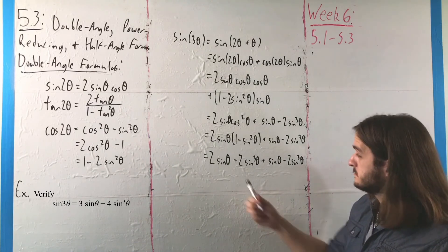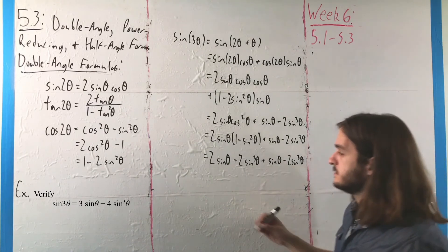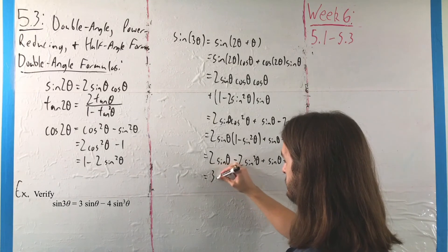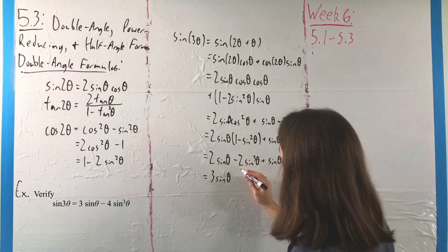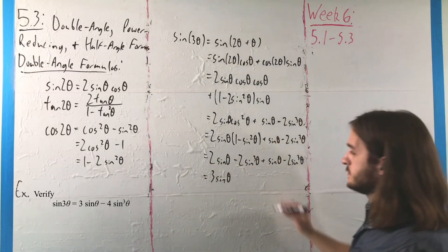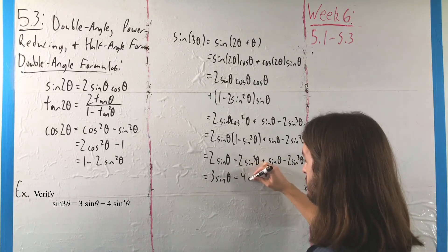Plus a sine of theta minus 2 sine cubes. And hey, we get what we want. And that's the sine of thetas. And we've got 3 of them. Match the sine cubes. And we've got negative 4 of those.